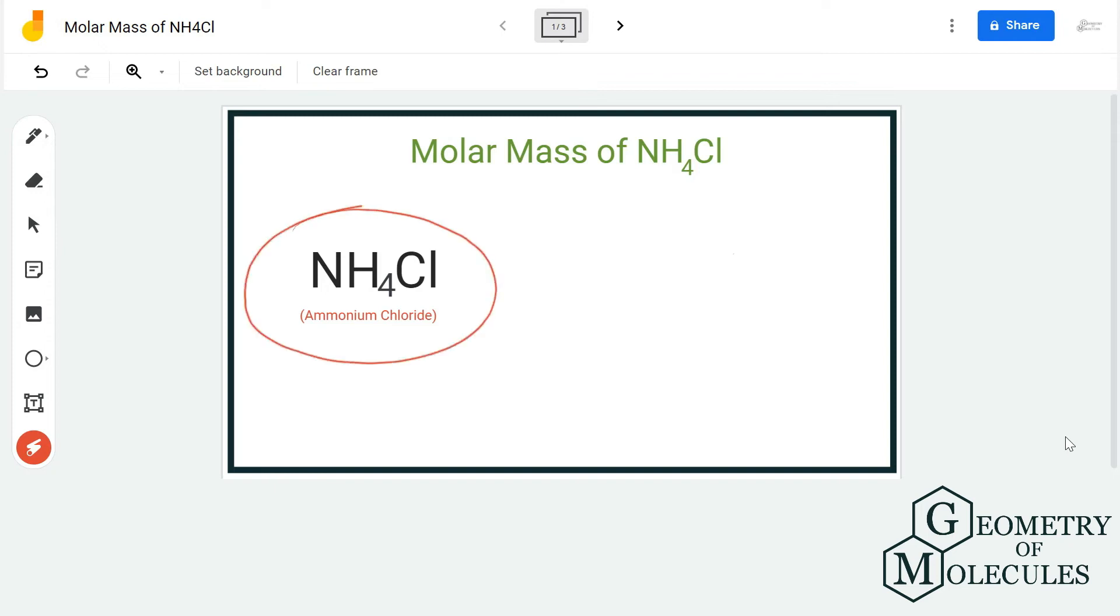Hi guys, today in this video we are going to find out the molar mass of NH4Cl, which is ammonium chloride. Make sure to use the right chemical formula to find out molar mass. If you mess up, there are high chances that you are not going to get the right molar mass.